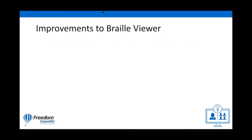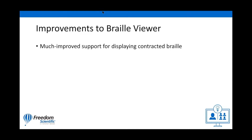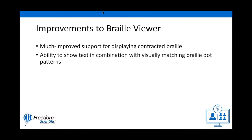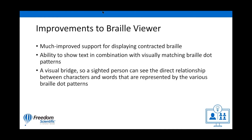In JAWS and Fusion 2020, we've made several updates to Braille Viewer, including much improved support for displaying contracted Braille, and the ability to show text in combination with visually matching Braille dot patterns — a visual bridge so a sighted person can see the direct relationship between the characters and words represented by the various Braille dot patterns.